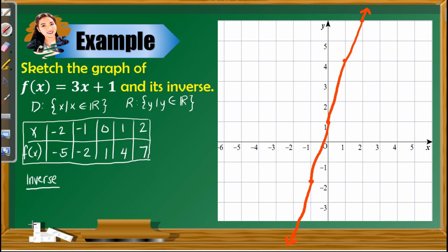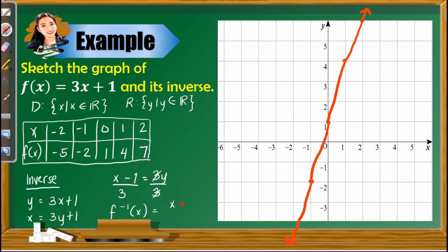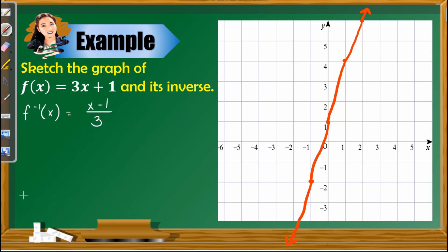To find the inverse, we follow four steps. Write y = 3x + 1, then interchange x and y to get x = 3y + 1. Solve for y: x − 1 = 3y, so y = (x − 1)/3. Therefore, f⁻¹(x) = (x − 1)/3. Since the original function is linear, the domain and range of this inverse are also sets of real numbers.